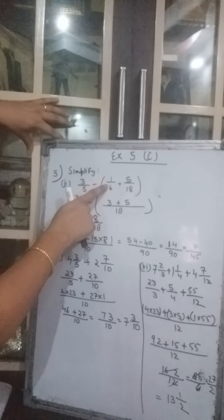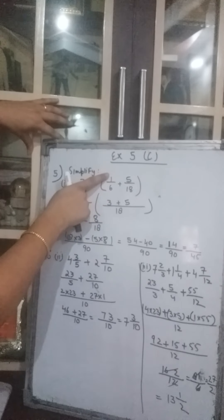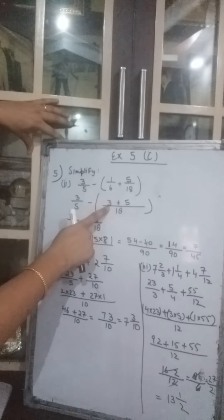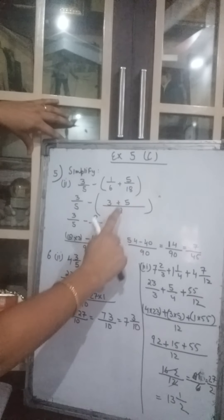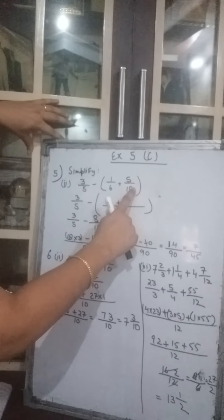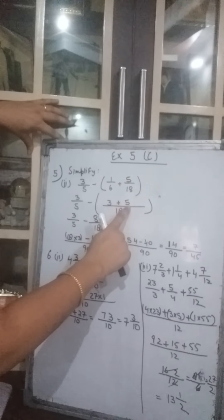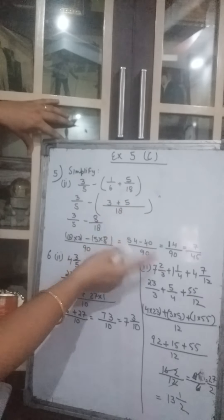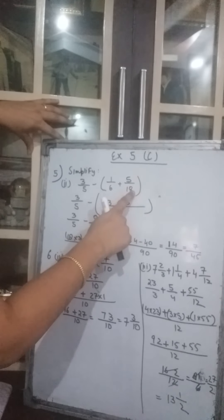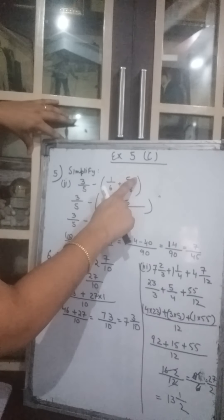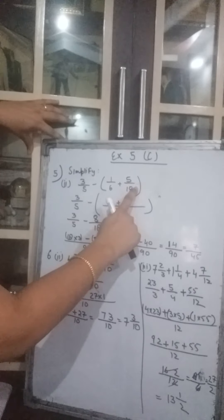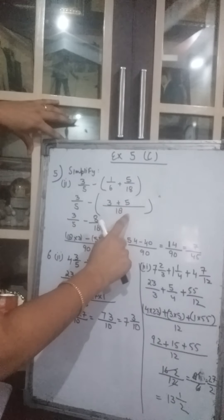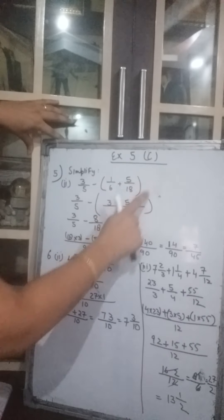Now 18 divided by 6 gives you 3. 3 multiplied by 1 gives you 3 only. And if the LCM is same as the denominator then the numerator comes as it is, because 18 divided by 18 gives you 1, and 1 multiplied by 5 gives you 5 only. So when the LCM and the denominator of one fraction are the same, the numerator comes as it is.